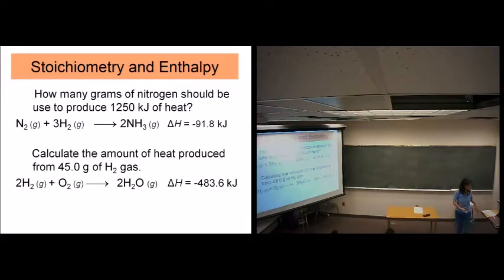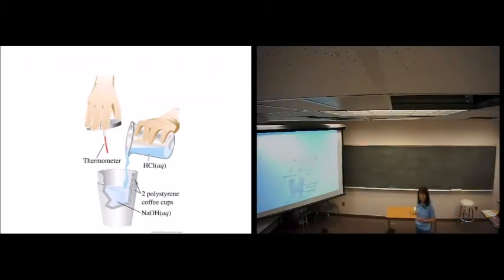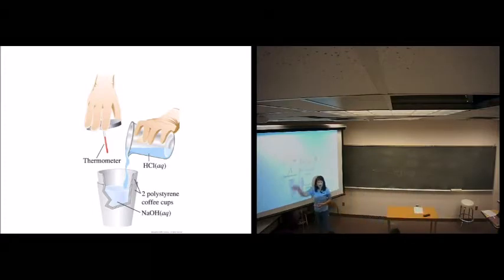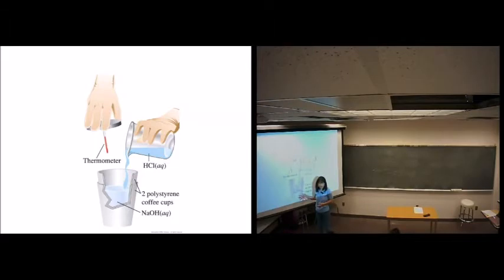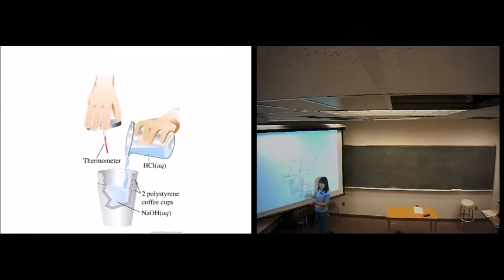The first one we're going to start with is calorimetry, because we have a lab coming up on that. Calorimetry is experimentally determining the enthalpy of a reaction. We're going to use what we call a calorimeter — this one we call a coffee cup calorimeter, because it's like two styrofoam coffee cups together. It's really high tech, but it works really well.